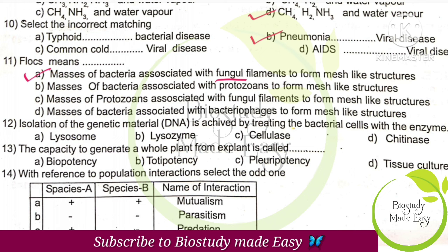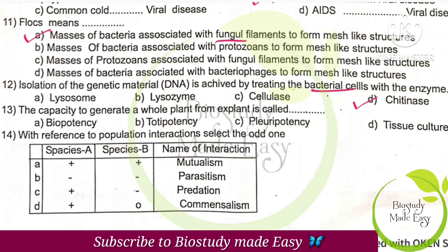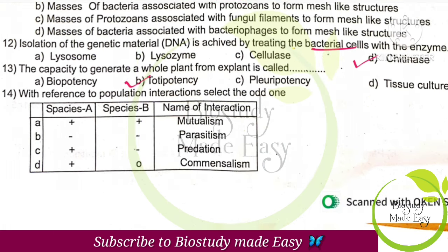For isolation of genetic material from bacterial cells, chitinase is needed because those cells have chitin in their cell wall. Capacity to generate a whole plant from an explant is called totipotency. This question is from the tissue culture chapter, which has actually been reduced in the syllabus, but they have still given a question from it.